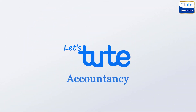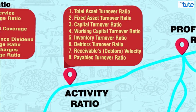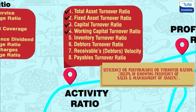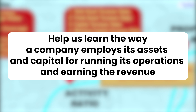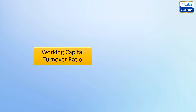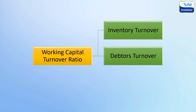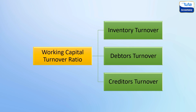Hello friends, welcome back to Let's Shoot Accountancy. In our previous session, we studied some of the activity ratios such as total assets, fixed assets and current assets turnover ratios and also the capital and working capital turnover ratios. These ratios helped us learn the way a company employs its assets and capital for running its operations and earning the maximum possible revenue. At the end of the previous session, we had discussed that the working capital turnover ratio is further segregated into inventory turnover, debtors' turnover and creditors turnover. So let's understand and analyze these ratios in more detail.